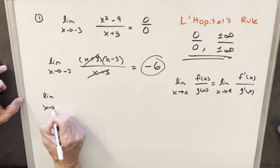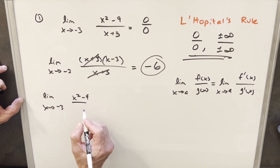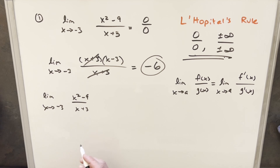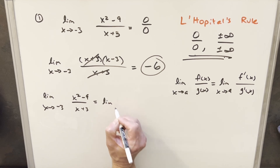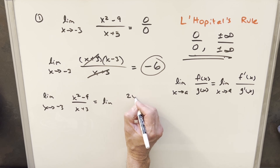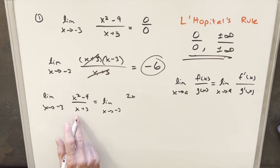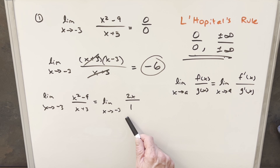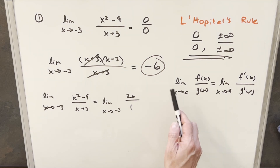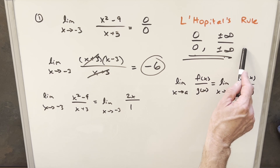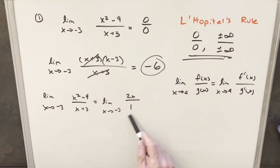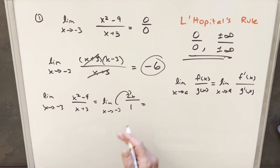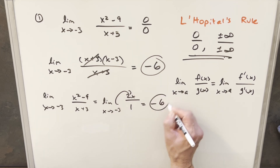We have the limit of x squared minus 9 over x plus 3, and after applying L'Hôpital's Rule we get 2x over 1. Notice that this is no longer an indeterminate form — we have a 1 in the denominator, so it doesn't match either case. Some people make the mistake of applying the rule again without checking. Now we just plug in minus 3: we get minus 6, the same answer we found by factoring.